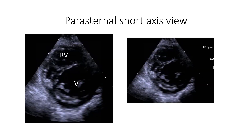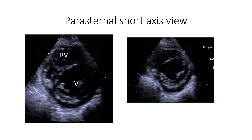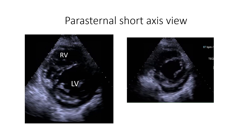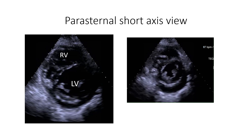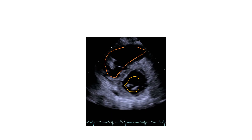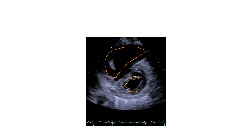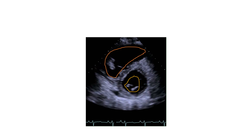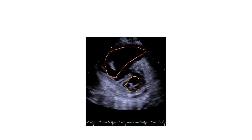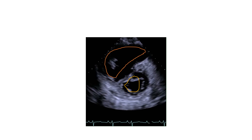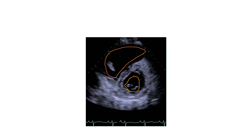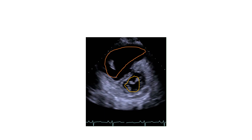These images show the parasternal short axis view with the right and left ventricle; the interventricular septum is visualized between them. The left ventricle is normally circular in shape and larger than the right ventricle. In this view, we can see ventricular interdependence — high pressures in the right ventricle push the septum towards the left ventricle, compromising its diastolic and systolic function. Note the D-shaped left ventricle and the dilated right ventricle.